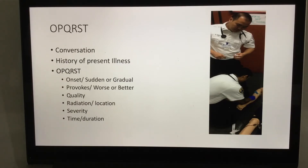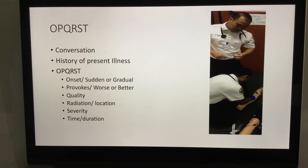P is Provokes or Palliative — we're basically asking what made this worse and what made it better. Q is Quality, which is a description: 'Can you describe what you're feeling right now? What are your symptoms and what do they feel like? Have you had this before, and is it similar to something you've had? What was the diagnosis?'